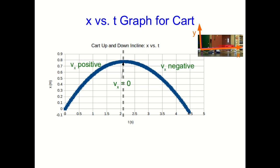Everything before that, it's going up the ramp and vx is positive with our choice of axes, and everything after that, it's going back down the ramp and vx is negative. Now because this is accelerated motion, the x versus t graph isn't a straight line. The curvature of it is telling us about the acceleration.